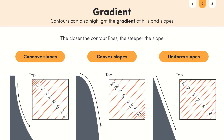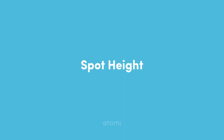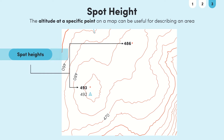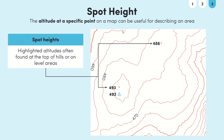Knowing the gradient is great for being able to describe an area, but so too is the altitude at a specific point. The altitude is written on some of the contour lines but there are also specific altitudes that are highlighted called spot heights. Spot heights are often found at the top of hills or on level areas. On OS maps they are always shown next to trig points, displayed by this symbol — a blue triangle with a dot inside it.